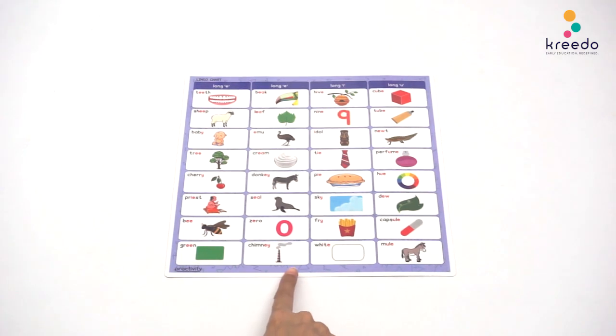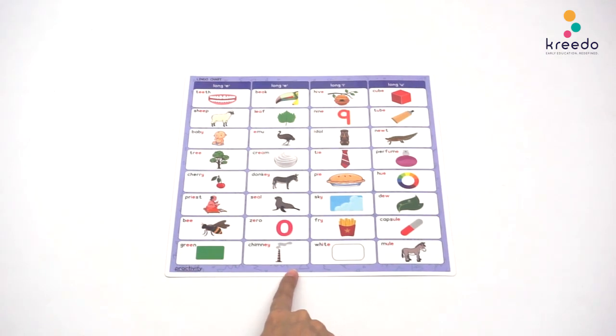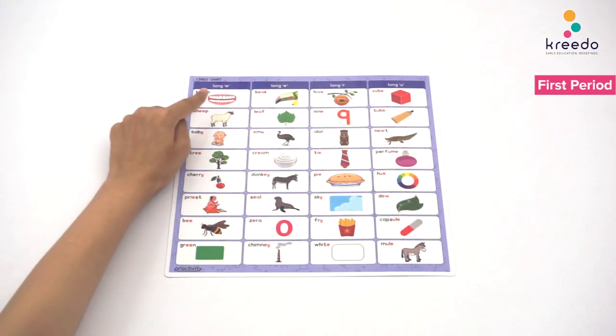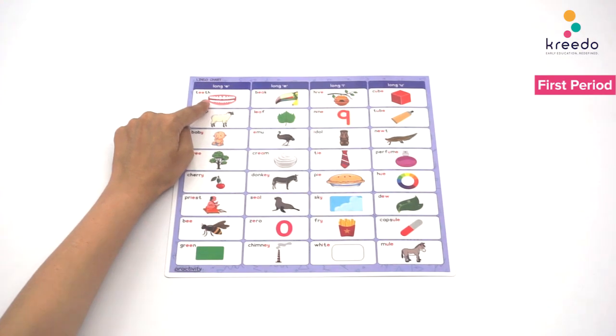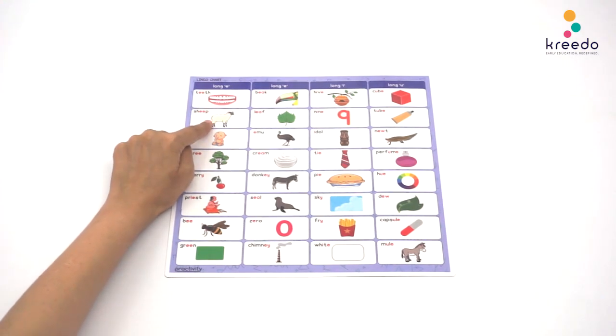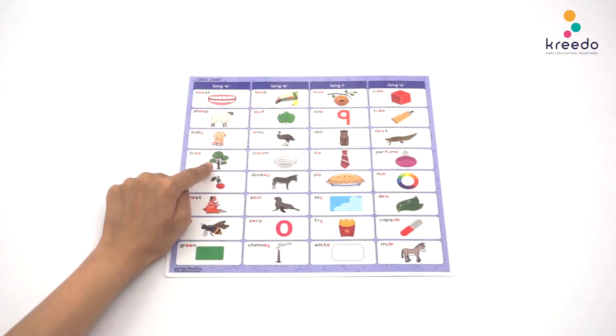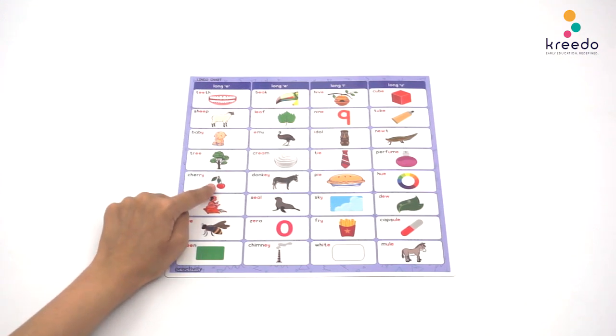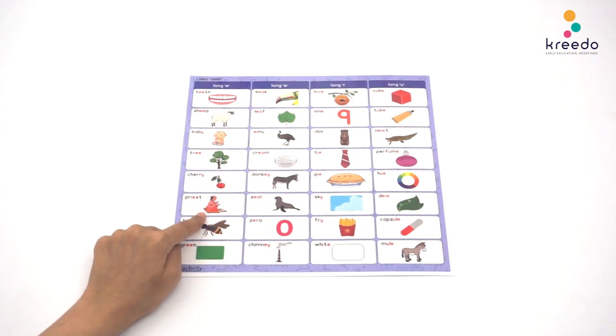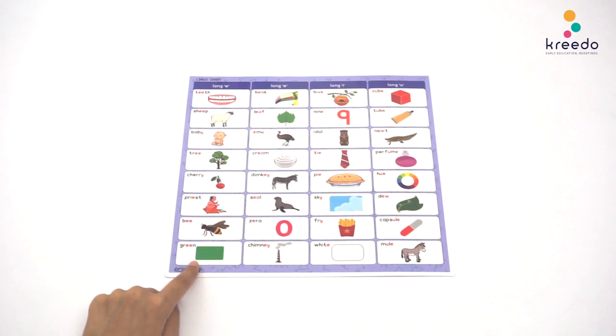Take the blue lingo chart and place it in front of the child. Introduce the names in the first column. Point to the teeth and say these are teeth. This is a sheep. This is a baby. This is a tree. This is a cherry. This is a priest. This is a bee. This is green.